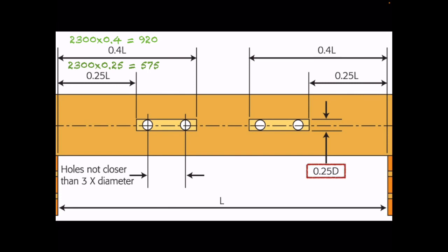Regarding the size of the hole: the hole cannot be any bigger than 0.25 of the depth of the joist. The depth of this joist was 600 millimeters. 0.25 is a quarter, so the hole cannot be bigger than a quarter of the depth. In this case: 600 × 0.25 = 150 millimeters maximum diameter. If you need to drill a bigger hole than that, it is not allowed in this joist.